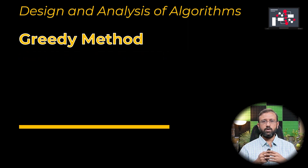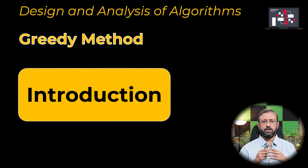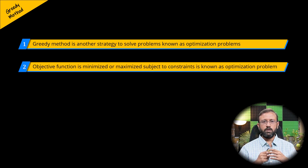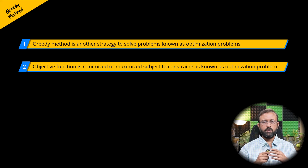In this video we will look at the greedy method. The greedy method is another strategy, just like the divide and conquer approach, to solve different kinds of problems known as optimization problems — problems in which some function called an optimization or objective function is to be minimized or maximized, subject to some constraints.